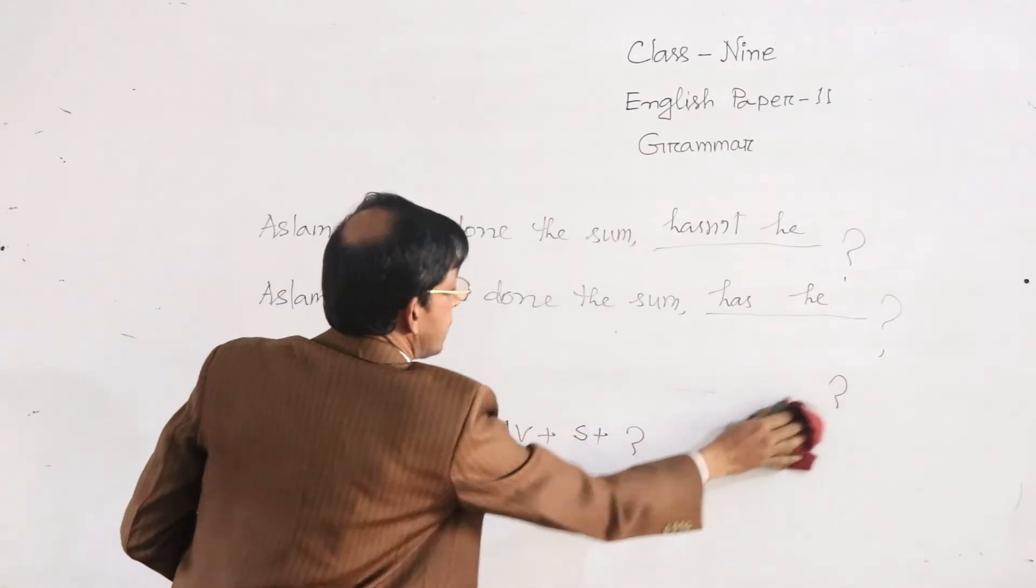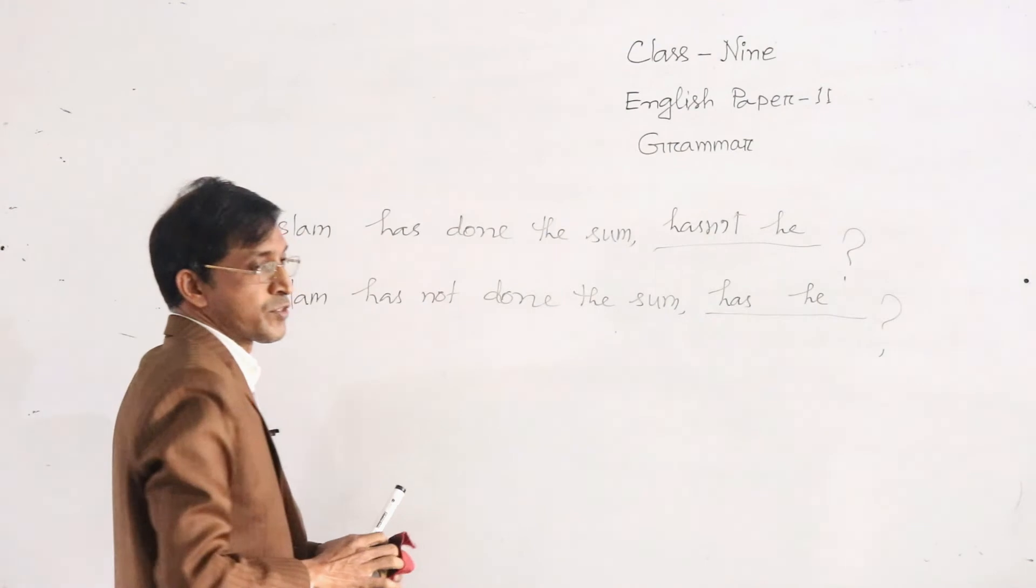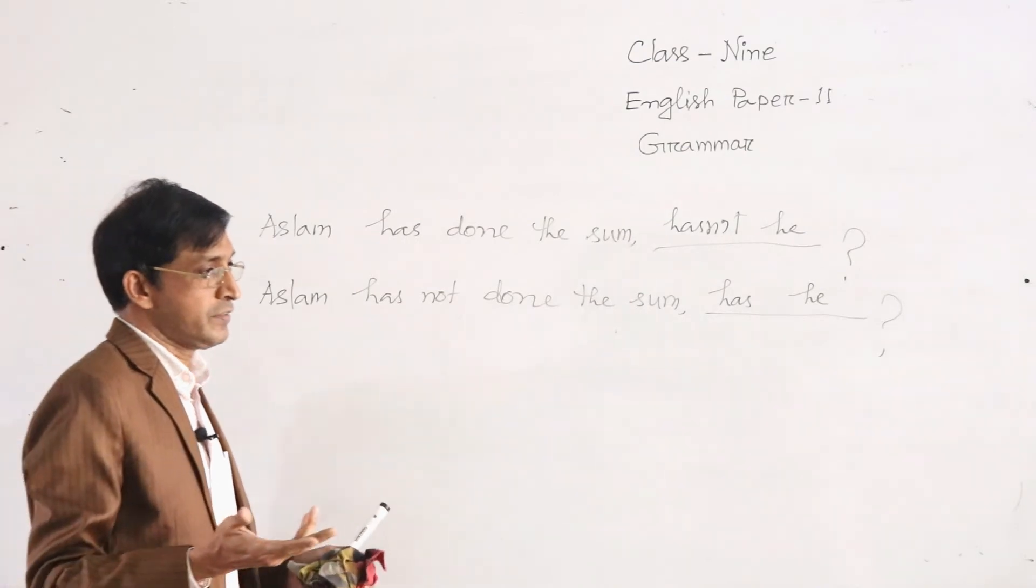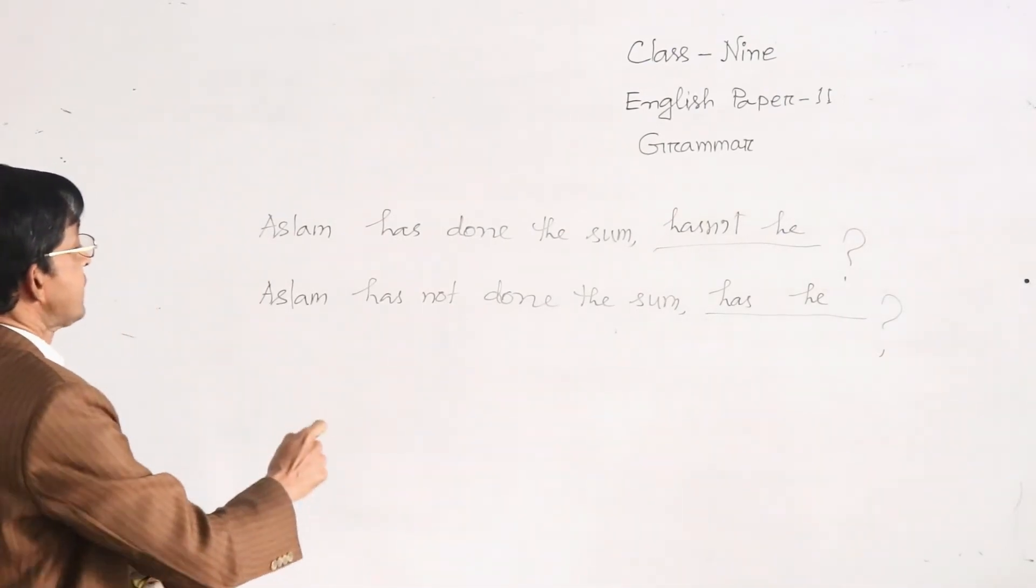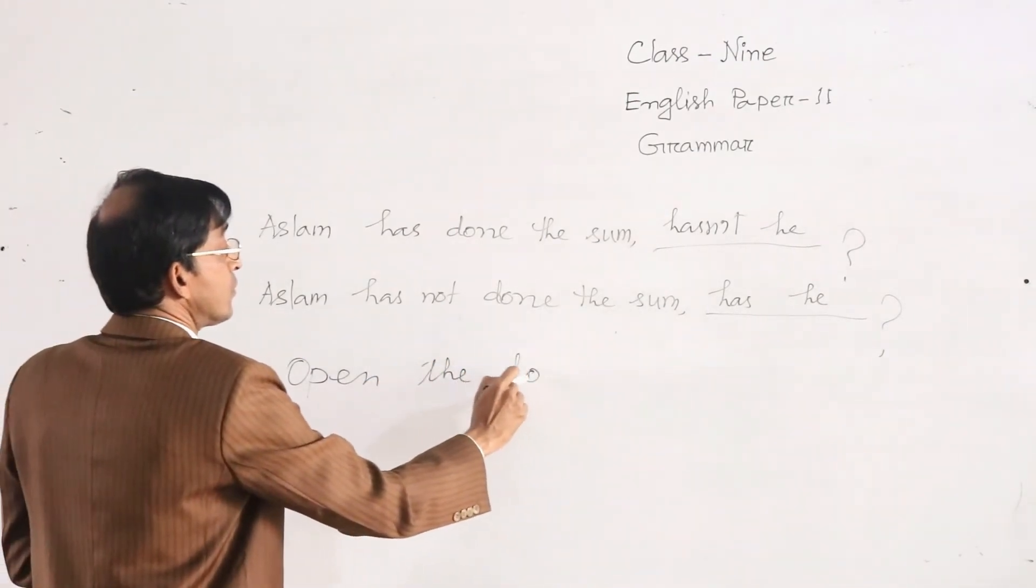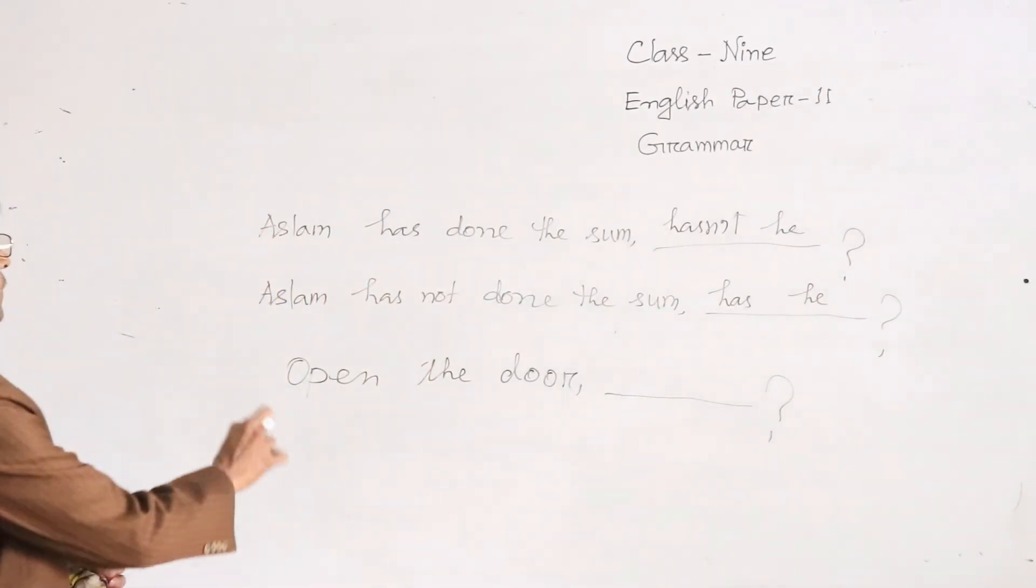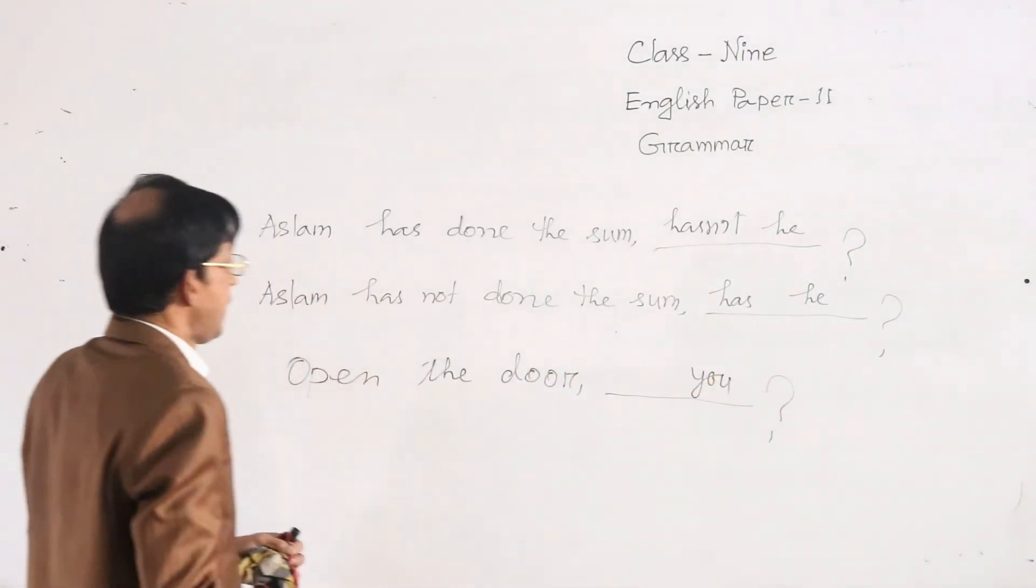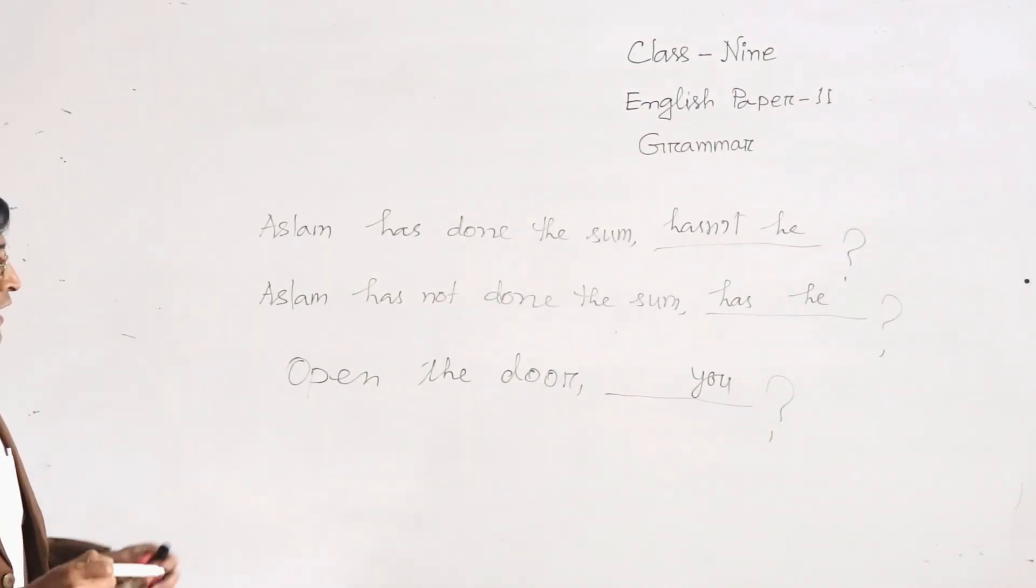Dear students, you have to make tag question for the sentence of assertive sentence, imperative sentence and exclamatory sentence. In the imperative sentence, open the door. In this sentence, here subject you, and auxiliaries are not available here. So when auxiliaries are not available...